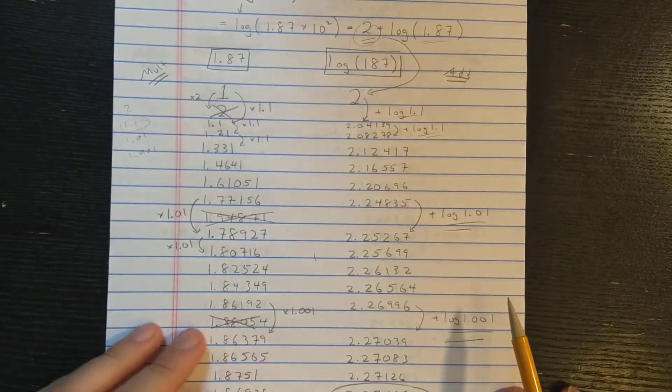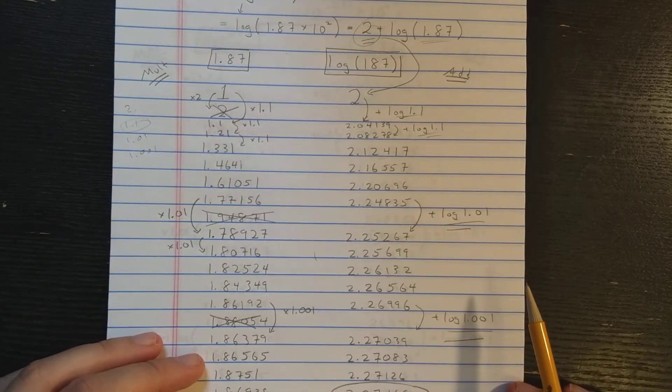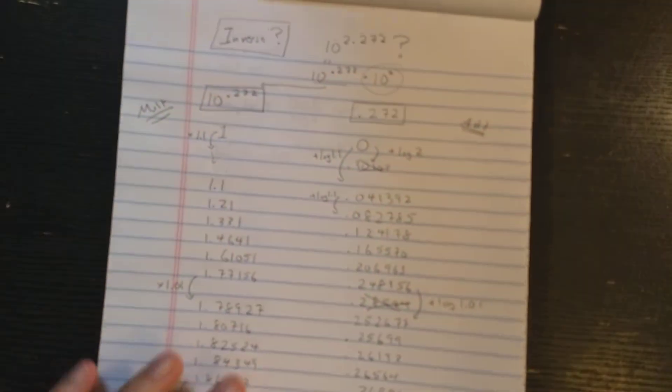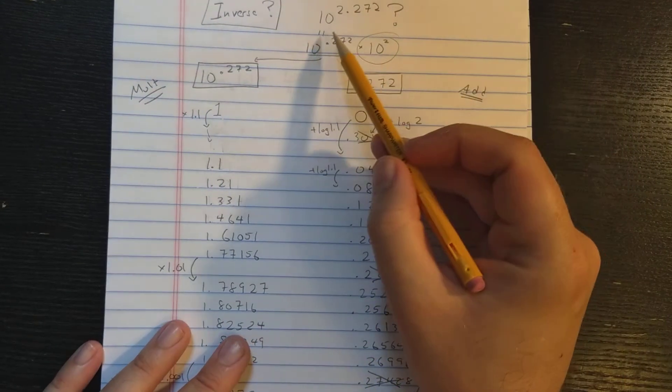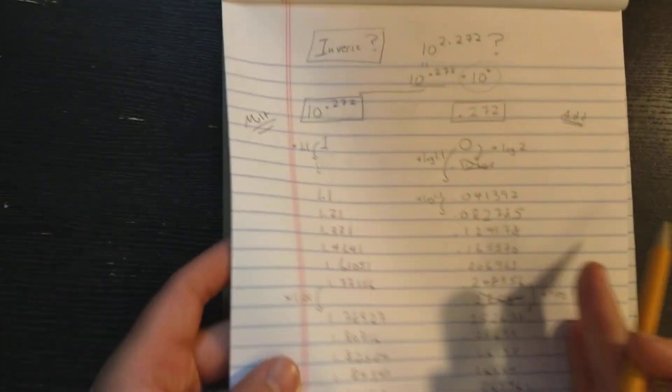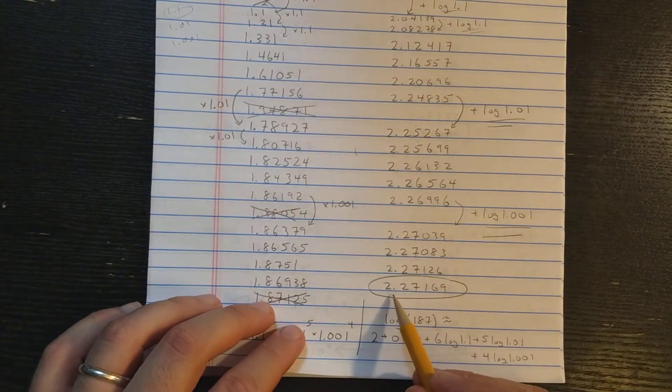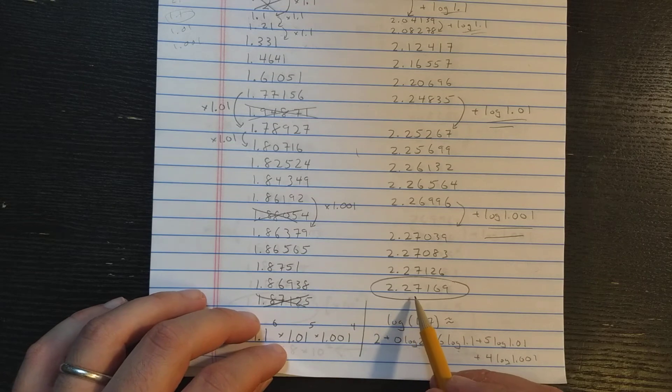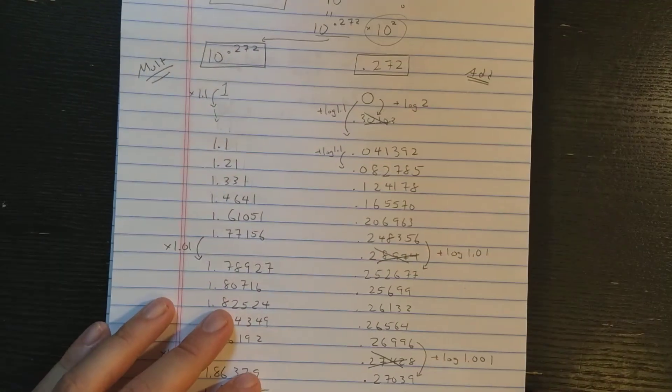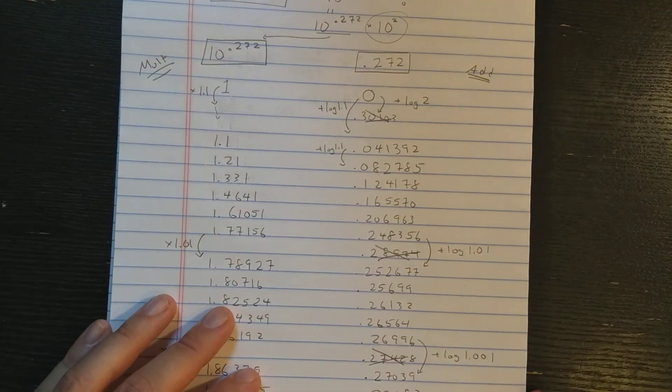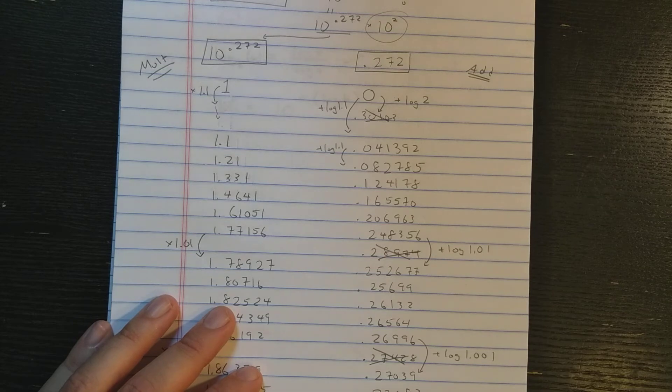Just for completeness here, let's see how you could reverse this operation and compute an exponential function. So let's say that I want to compute 10 to the 2.72. You'll see what I got here in the end is that the logarithm was about 2.2716. So I've rounded that up to 2.72.